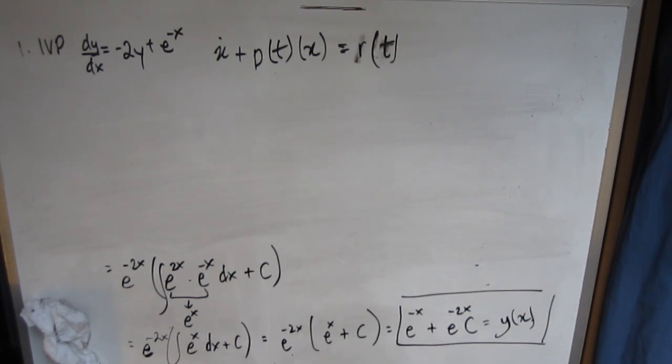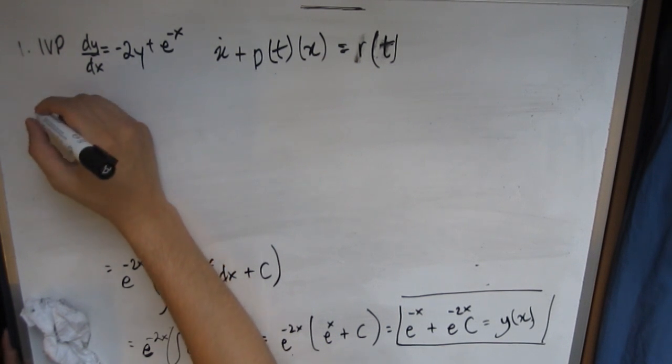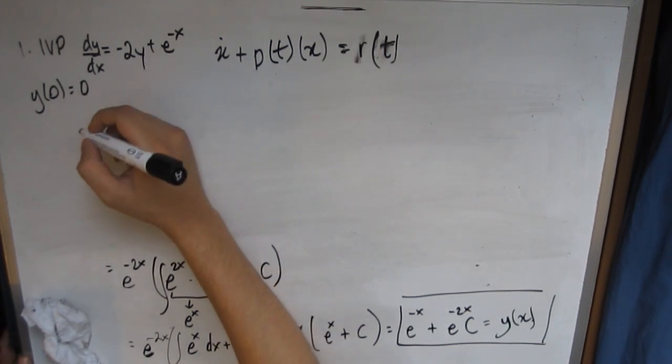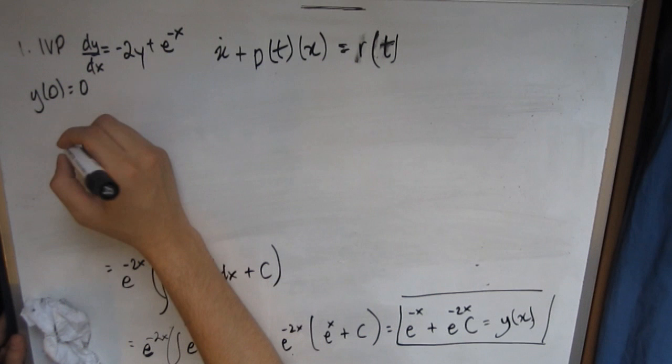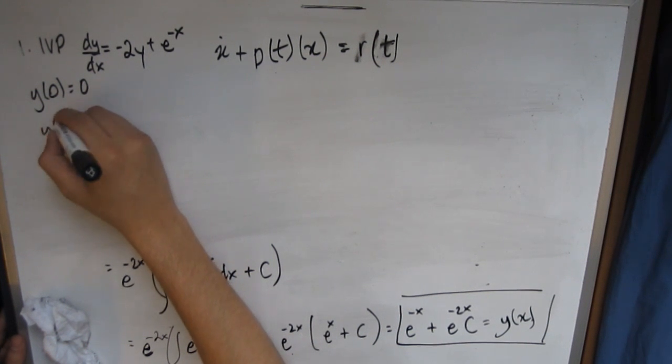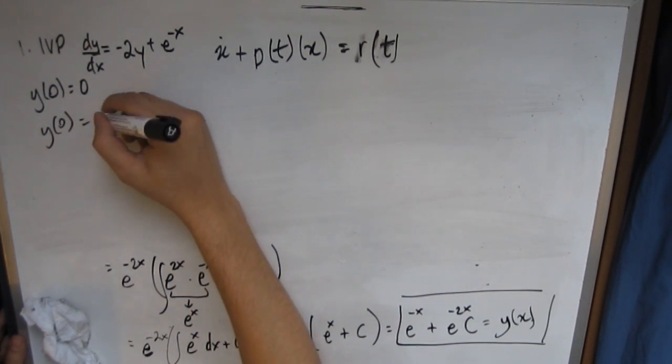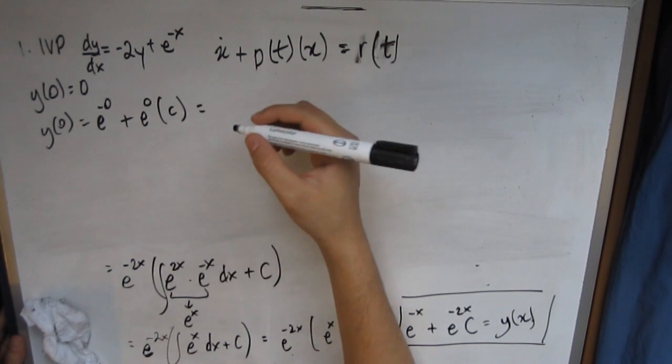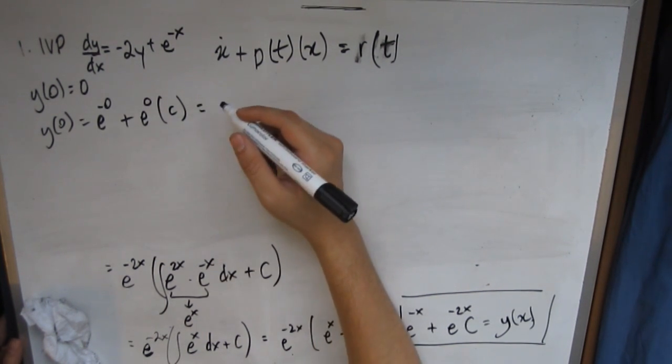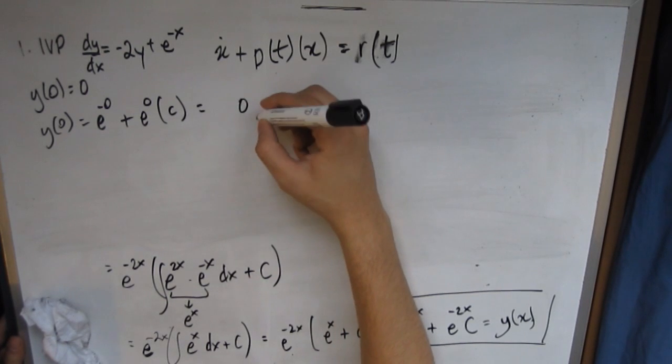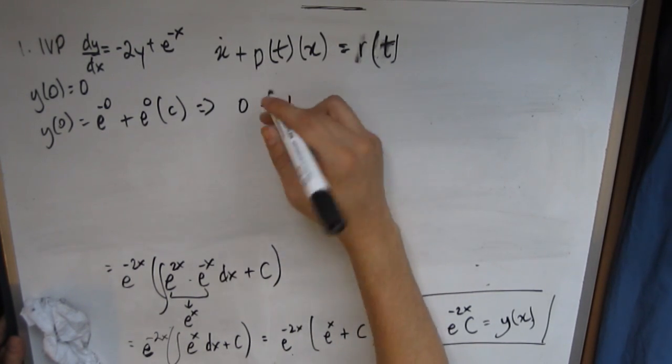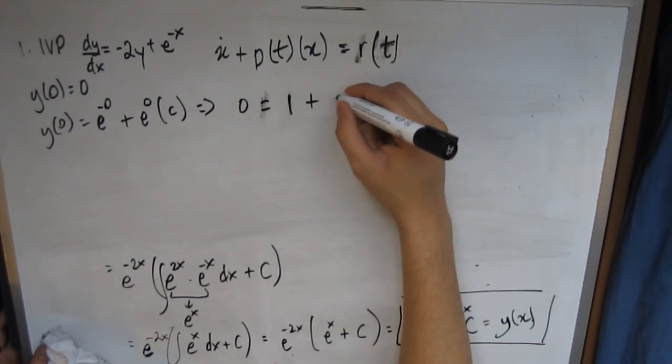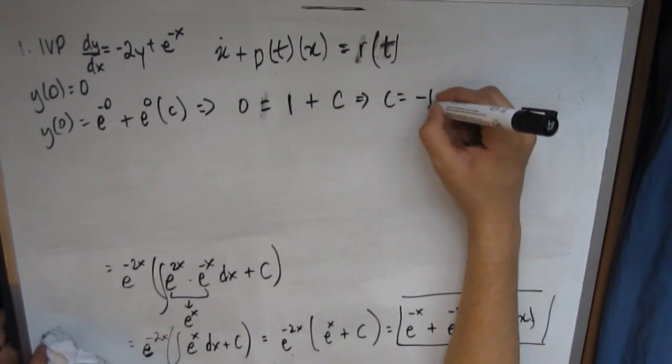So now that we've gotten this as our equation, we can go ahead and note that we were told that at y(0), the equation y = 0 and x = 0. So we can substitute that in right there. So you get y(0) = e^(-0) + e^0 × c. This will obviously mean, this gives you 0 = 1 + c. So c = -1.